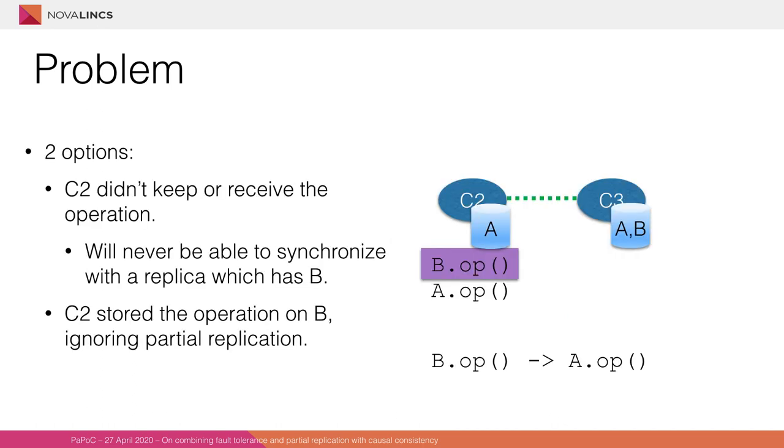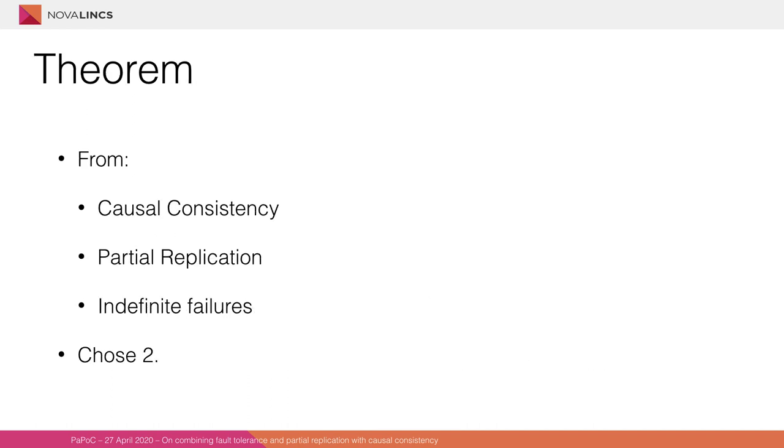In fact, here there are two options. The first is that C2 didn't store or receive at all the operation on B. And thus, even if it creates any future operation, any such operation would depend on this A, which would depend on B, and thus it will never be able to synchronize with any other replica that has B in its local store. The alternative is that C2 did store the operation on B, but this would be ignoring partial replication. Now, this previous example maps directly to the theorem that we have in the paper, which states that from causal consistency, partial replication, and indefinite replica failures, we can only have two.